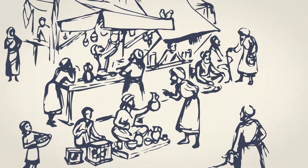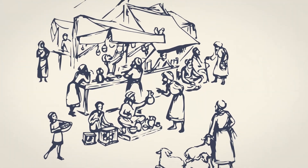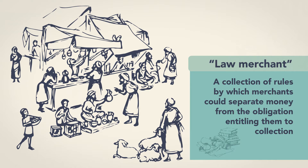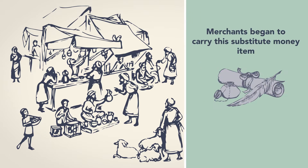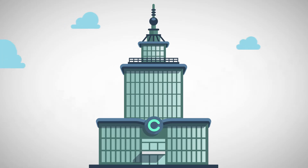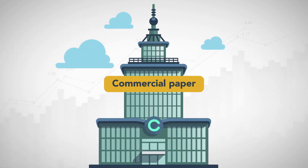These debts were part of a system developed in the Middle Ages called the law merchant, which was a collection of rules by which merchants could separate money from the obligation entitling them to collection. Merchants began to carry this substitute money item that allowed them to use debts owed to them as a form of payment. Today, this substitute money item is called commercial paper.